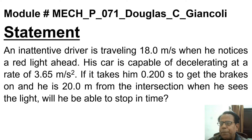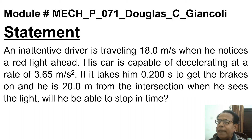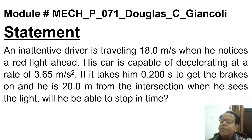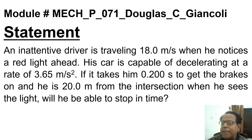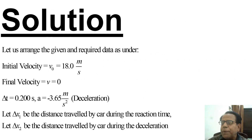An inattentive driver is traveling 18.0 meters per second when he notices a red light ahead. His car is capable of decelerating at a rate of 3.65 meters per second squared. If it takes him 0.200 seconds to get the brakes on and he is 20 meters from the intersection when he sees the light, will he be able to stop in time? Let us see whether he will be able or not able to stop within time.